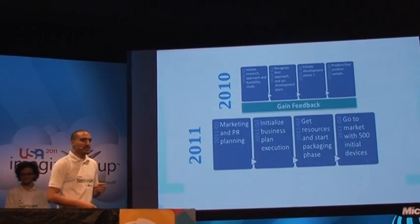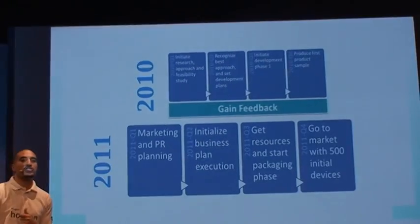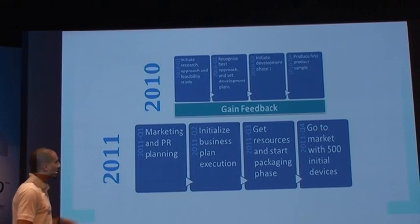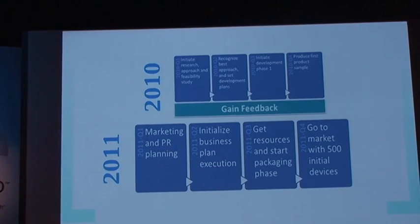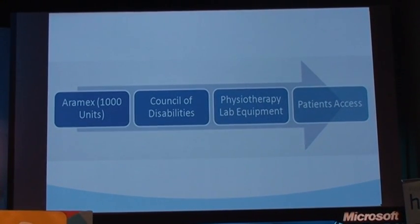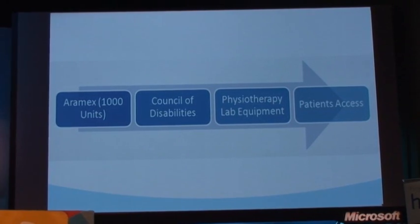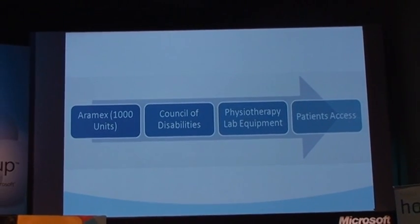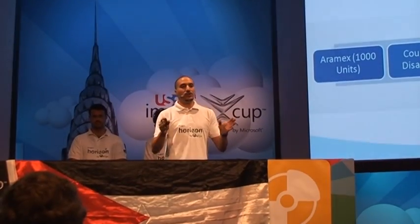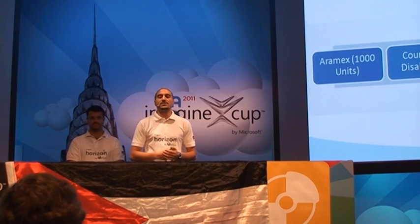The roadmap: 2010 was research, initiation, development, and prototyping. In 2011, Q1 and Q2 covered marketing and PR planning plus national business plan execution. Now we're getting resources, entering the packaging phase, and planning to go to market by Q4. Here's a current example: Aramex wanted to build the first 1,000 devices. They tried SmartNav, which costs $1,000–$1,500 per device — that's a million dollars for 1,000 units. We said we'll give you the device for $100 — that's $100,000 for 1,000 devices, which they'll place in labs for patients to access.